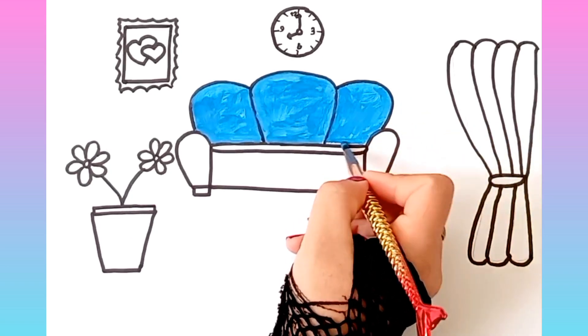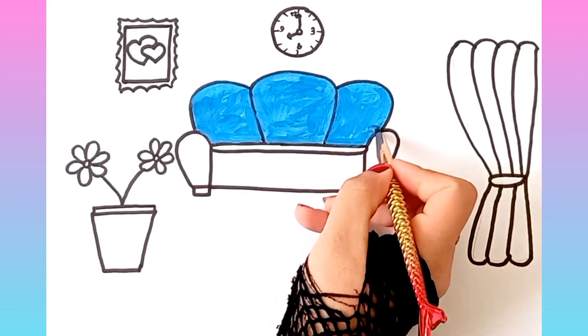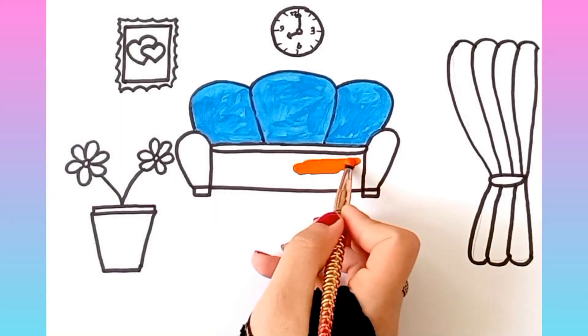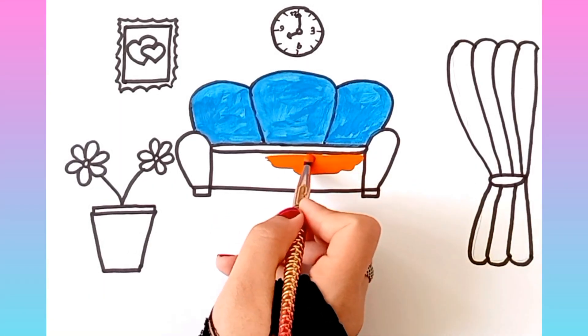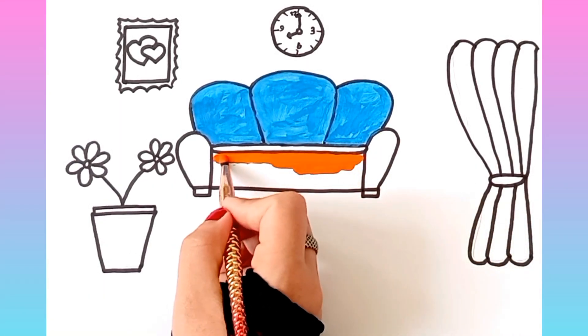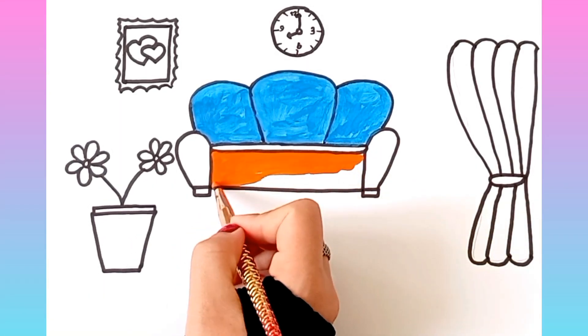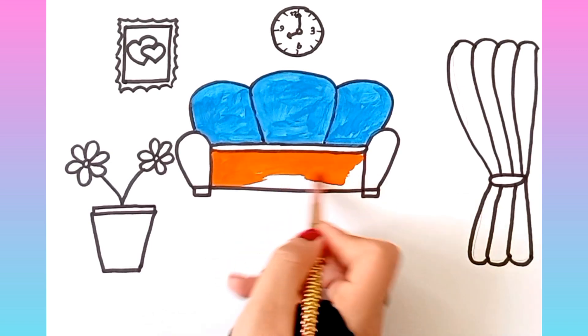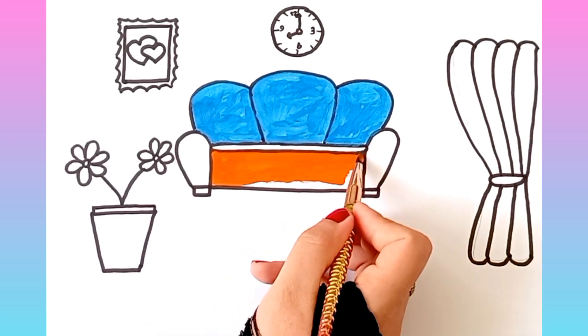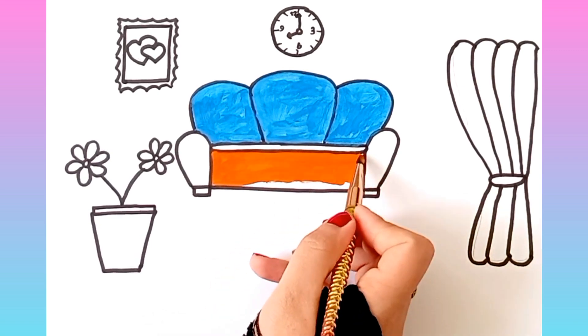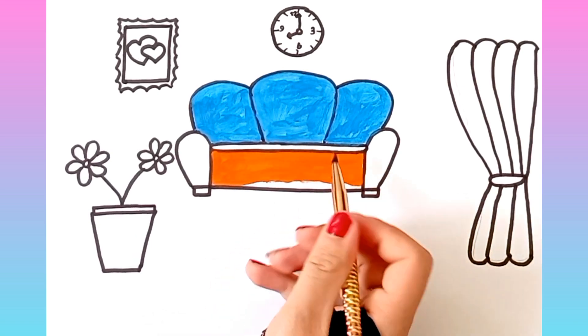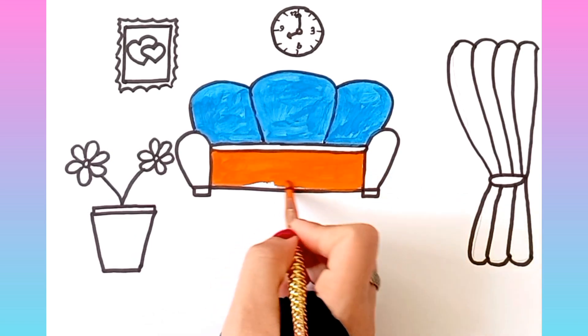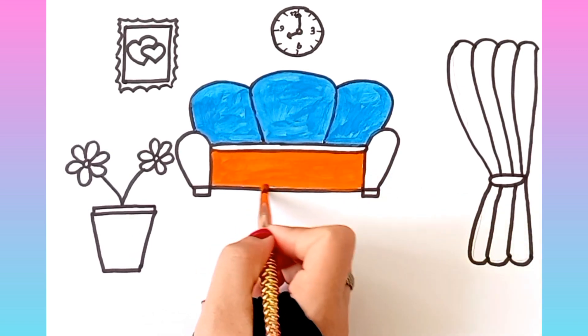A is for apple, a, a, apple. B is for ball, b, b, ball. C is for cat, c, c, cat.